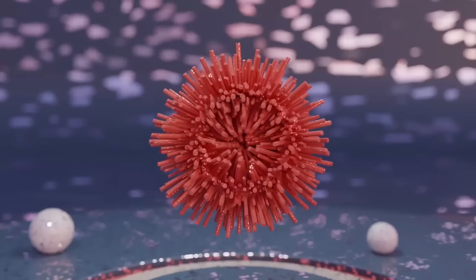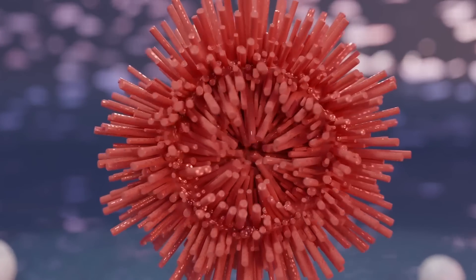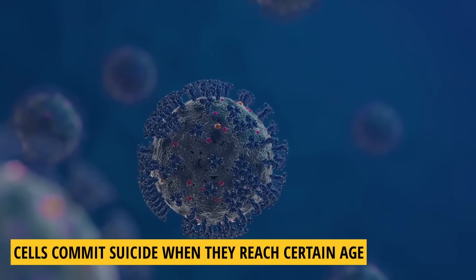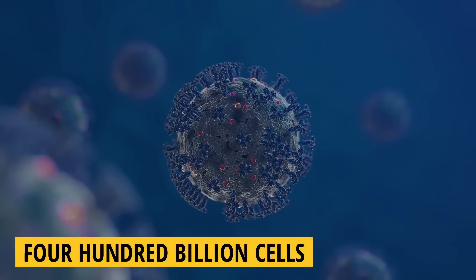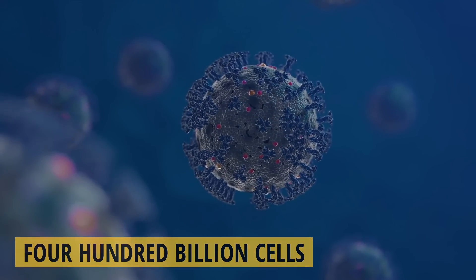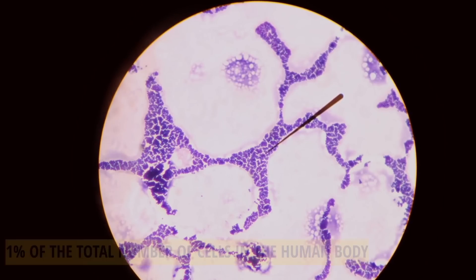After some time, they will age, and there may be abnormalities. To ensure the normal functioning of our body, cells commit suicide when they reach certain age, regardless of whether they are healthy or not. 400 billion cells in the human body die every day, equivalent to 1% of the total number of cells in the human body.